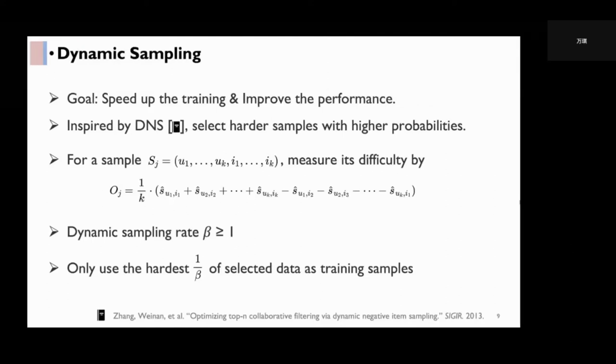For example, we measure its training difficulty by the value of the difference between the sum scores of positive pairs and that of negative pairs, dividing by K. The smaller this value is, the harder this sample is.